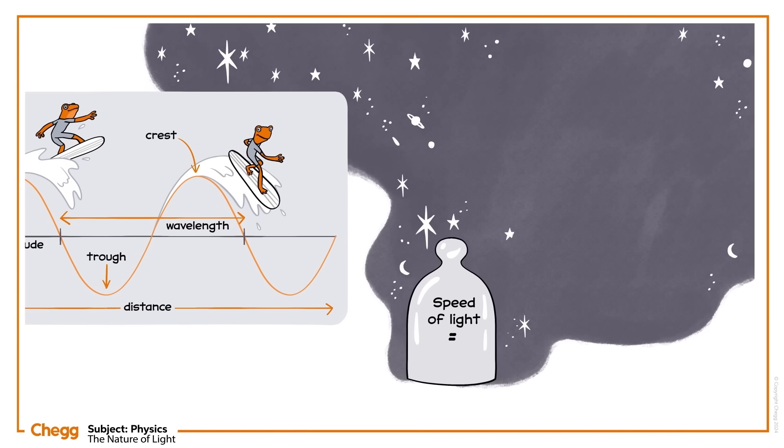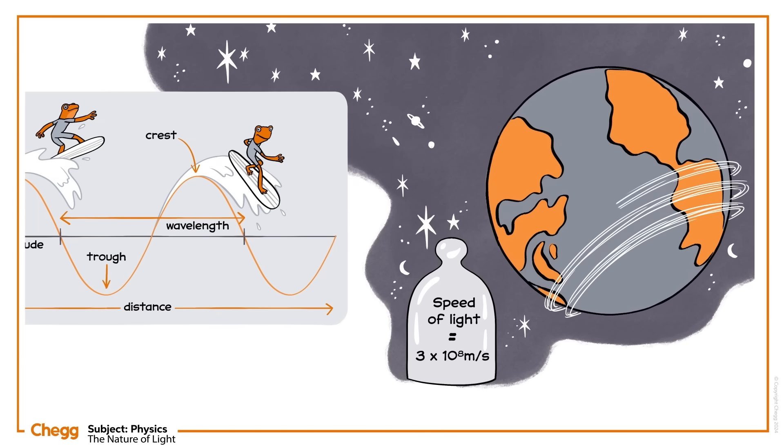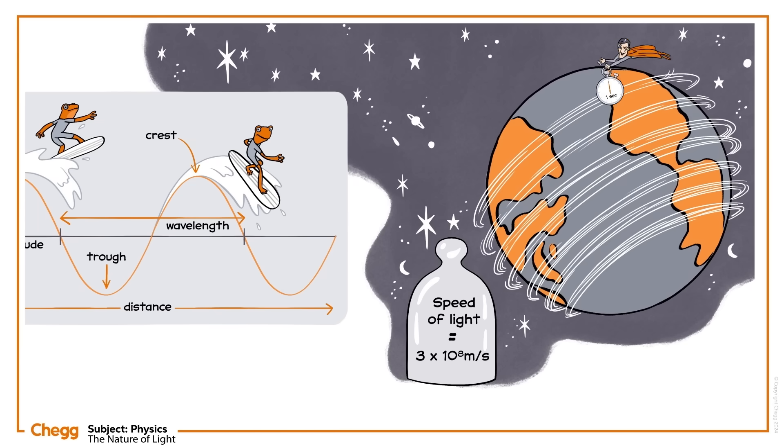The speed of light is three times ten to the power of eight meters per second, as long as the light is travelling within a vacuum. That means that light could travel around the earth a whopping 7.5 times in a second.